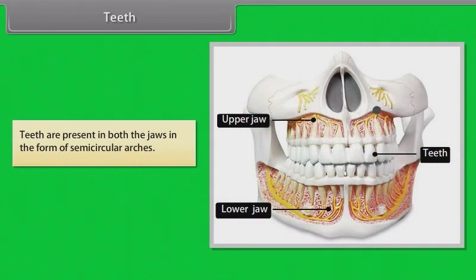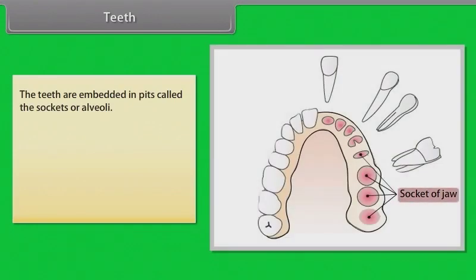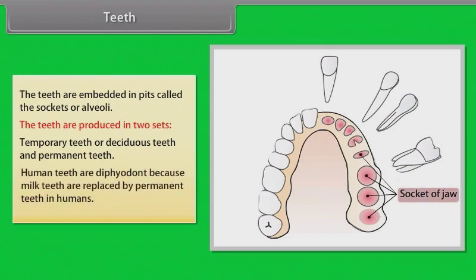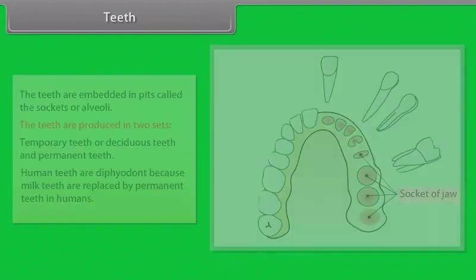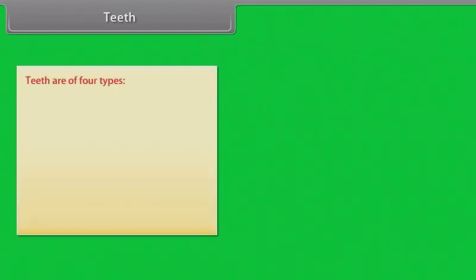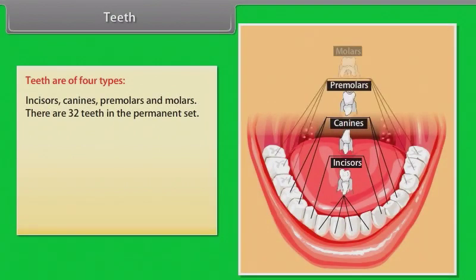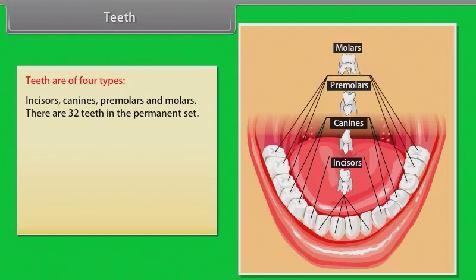Teeth are present in both jaws in the form of semi-circular arches, embedded in pits called sockets or alveoli. Teeth are produced in two sets: temporary or deciduous teeth and permanent teeth. Humans are diphyodont because milk teeth are replaced by permanent teeth. Teeth are of four types: incisors, canines, pre-molars, and molars. There are 32 teeth in the permanent set.